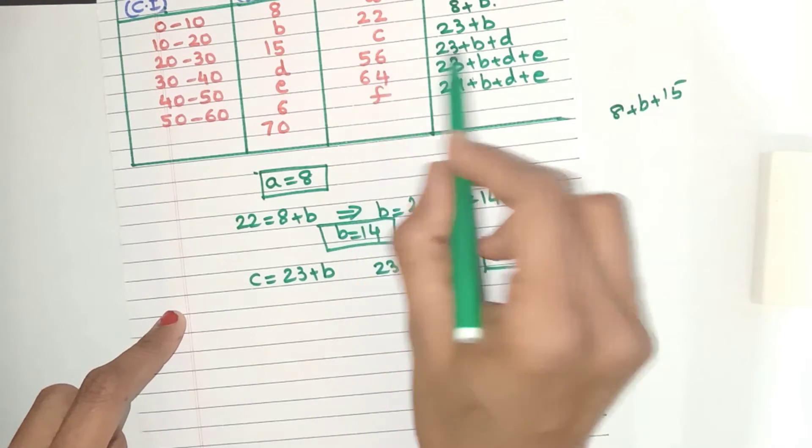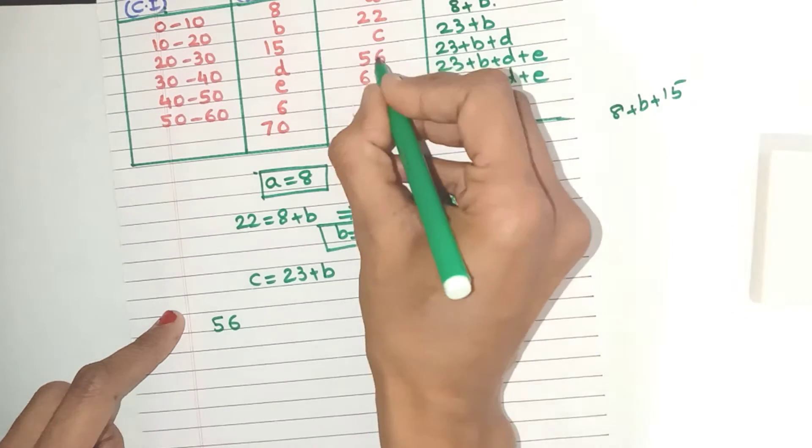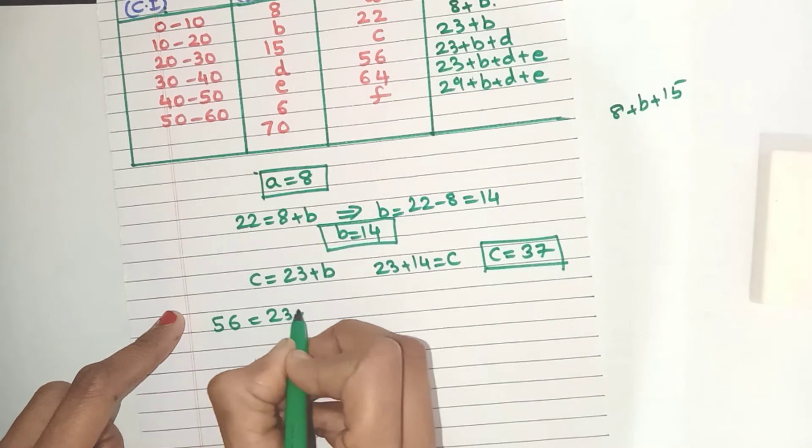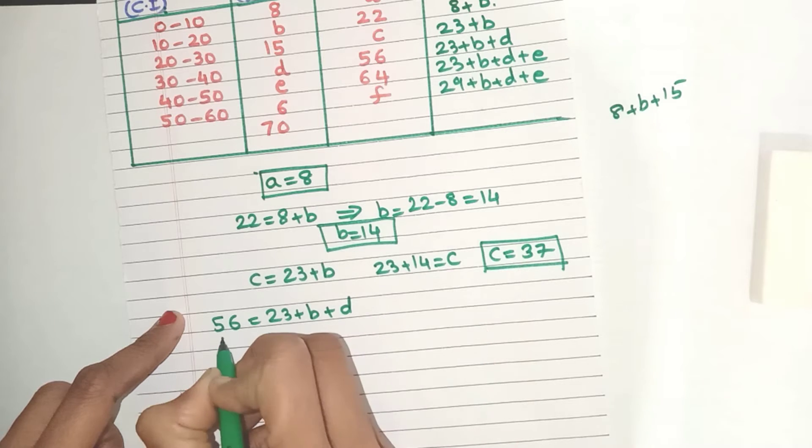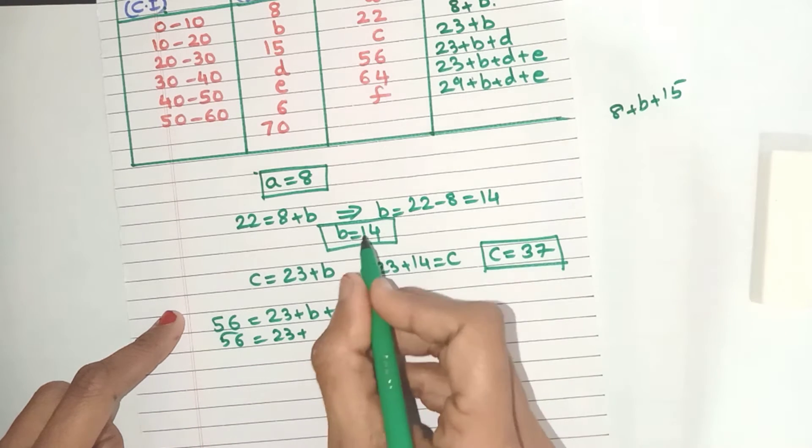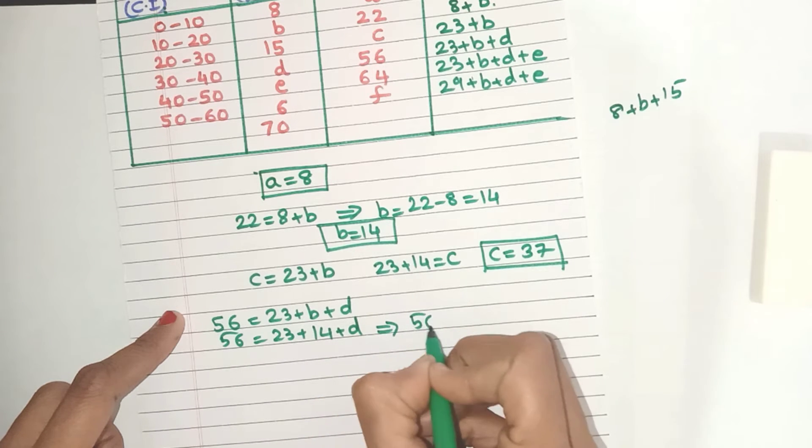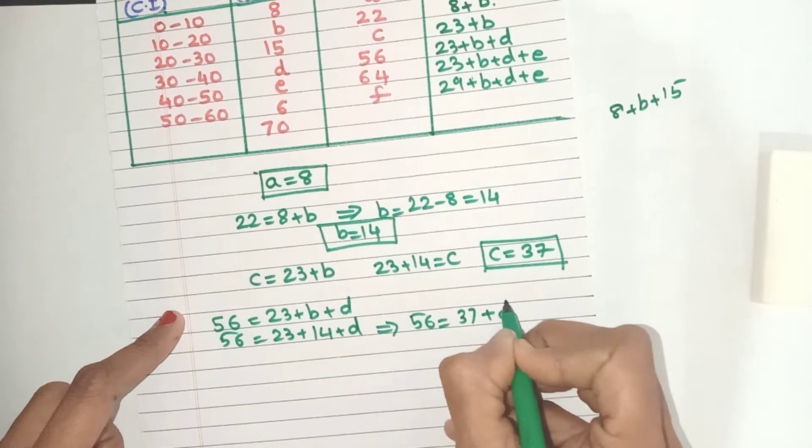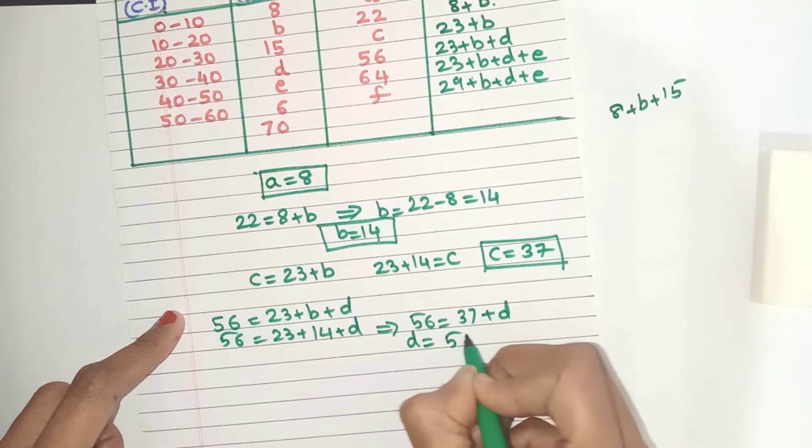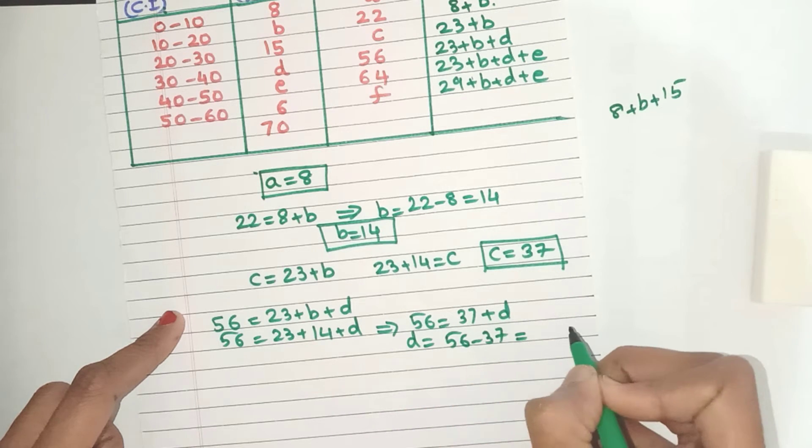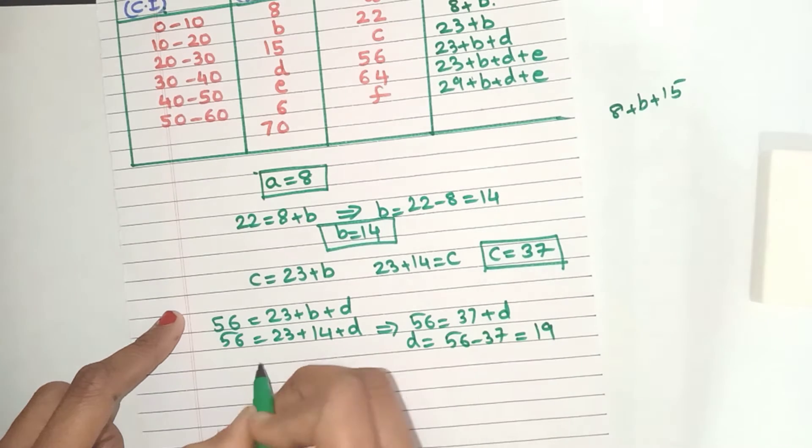Now what should we equate next? Yes, 56 equal to 23 plus B plus D. Now let's substitute whatever we know. We know B's value. So that means 56 is 37 plus D. So D is 56 minus 37, which is 19.